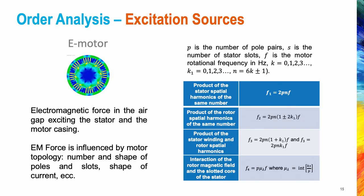The noise of an electric motor is caused by the electromagnetic force in the air gap, exciting the stator and the motor casing. The electromagnetic force can be decomposed into a tangential force generating e-motor torque and a radial force responsible for e-motor noise, which does not affect operation. The electromagnetic excitation force is influenced by design parameters such as motor topology, number of poles and slots, shape of poles and slots, shape of the current, and several other parameters.